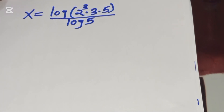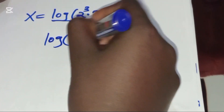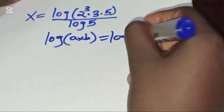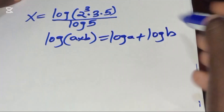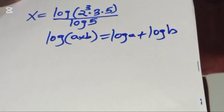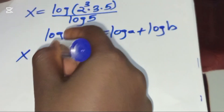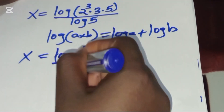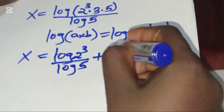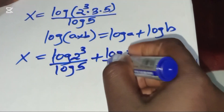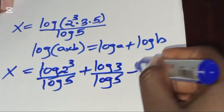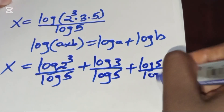This is in the form of log(a × b), which we can split using the product rule. Applying this property, we have x = log(2³)/log(5) + log(3)/log(5) + log(5)/log(5).